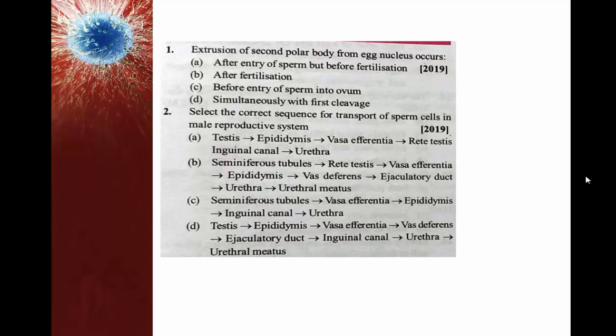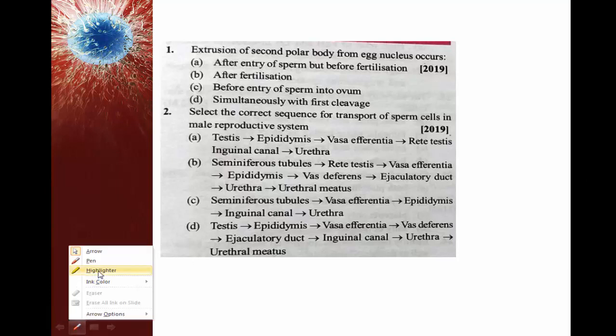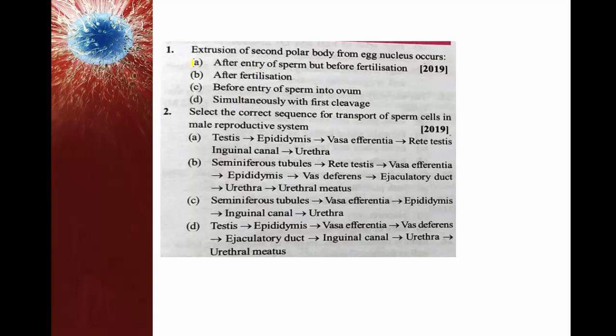The question is with reference to the second polar body. The primary oocyte produces the first polar body, and two second polar bodies are produced — one from the first polar body and another from the secondary oocyte. The answer for this question is: after entry of sperm but before fertilization. Once the sperm enters into the egg, the second polar body is excluded — this is known as polar body extrusion (PBE).